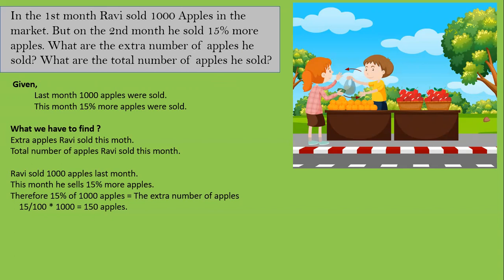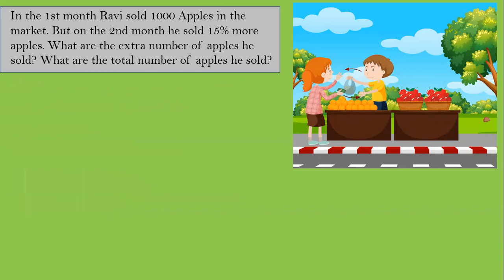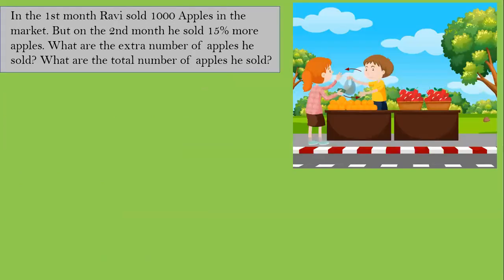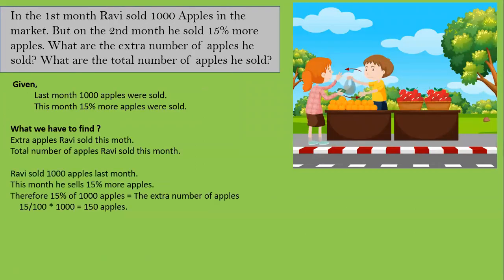The 15 percent extra is based on the 1000 he sold in the first month. So the extra apples are 15 by 100 into 1000. Using the formula: x percent of a given quantity equals x by 100 into given quantity — so 15 percent of 1000 equals 15 by 100 into 1000, giving us 150 apples as the extra number.